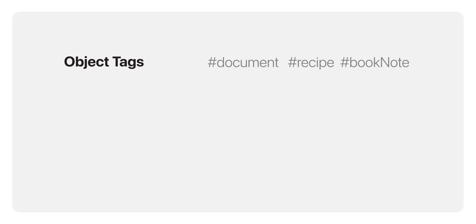A single note can have several tags, which means you can find it through different pathways depending on what makes sense at that moment. It's faster, more intuitive, and takes the stress out of organizing. In Forever Notes, we use five types of tags. Object tags tell you what the note is — like #document, #recipe, or #book-note.